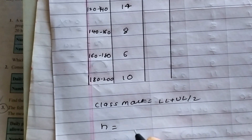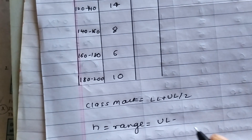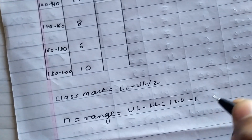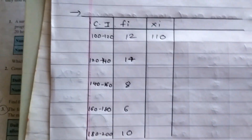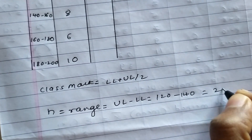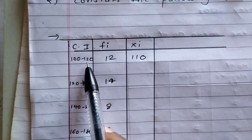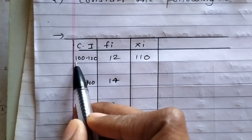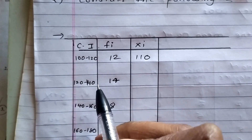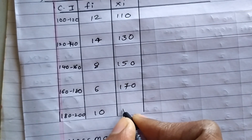The range H is denoted as the difference between upper limit and lower limit. For example, 120 minus 100 gives H equal to 20. Now by observation, the class marks are: 110, 130, 150, 170, and 190 — each being the midpoint of its respective class interval.